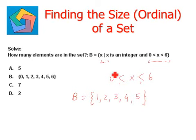Again, I repeat, 0 and 6 will not be included because the equal to sign is not here. So the number of elements over here are 5. This is the size of the set.